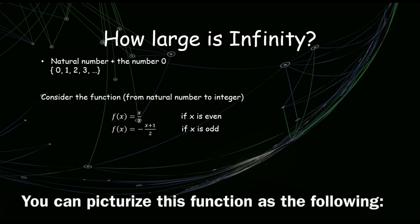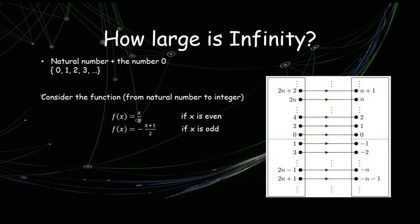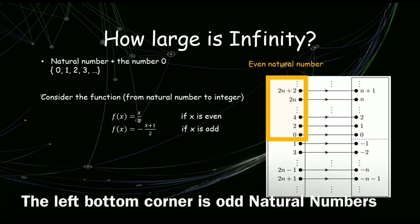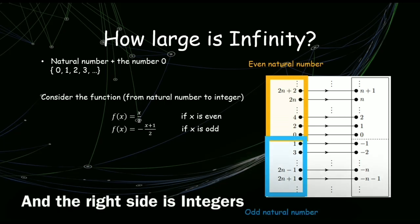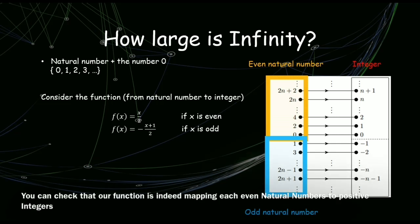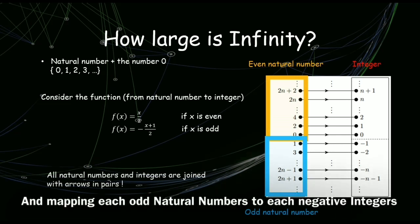We can picturize this function as the following. The left top corner is even natural numbers. The left bottom corner is odd natural numbers. And the right side is integers. You can check that our function is indeed mapping each even natural number to positive integers and mapping odd natural numbers to negative integers.